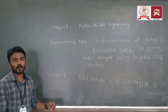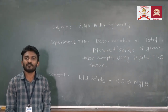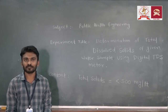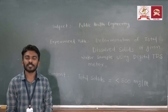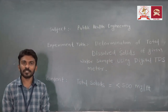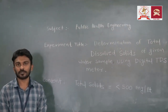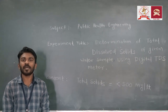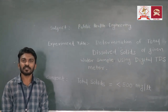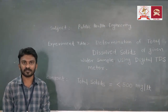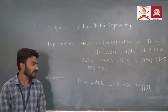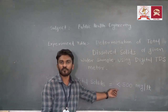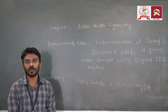Now the theoretical content. There are 5 types of solids in water: fixed solid, suspended solid, dissolved solid, total dissolved solids, and volatile solids. We have been given various limits by Indian standards. The limit for total dissolved solids given by Indian standards is less than 500 mg per litre for drinking water.